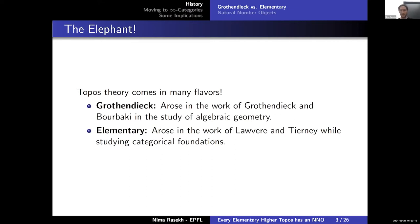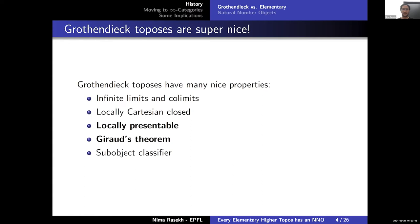We can break down toposes in various ways, and this conference has been a great example of the different perspectives. One perspective arose in the study of algebraic geometry in the Grothendieck setting, and then there's an elementary perspective — the elementary topos — which is more connected to type theory. They are obviously connected but also have differences.